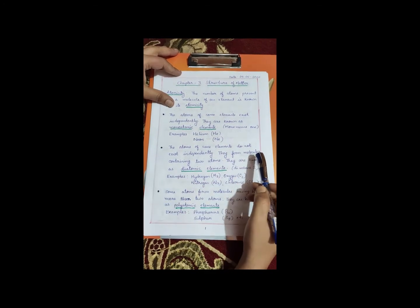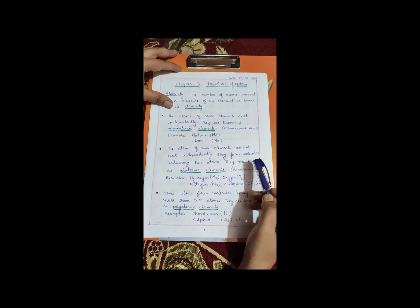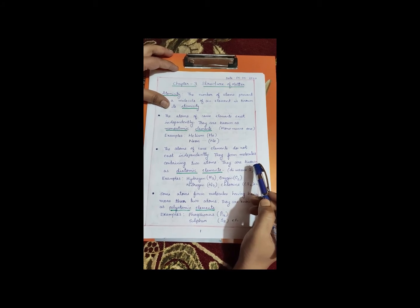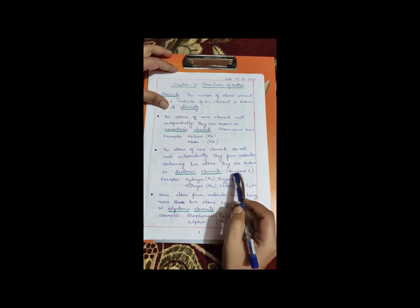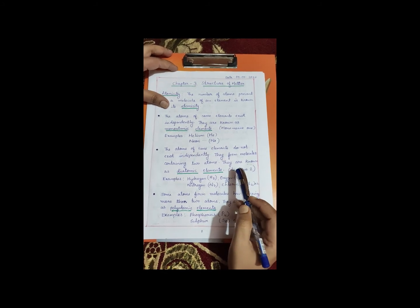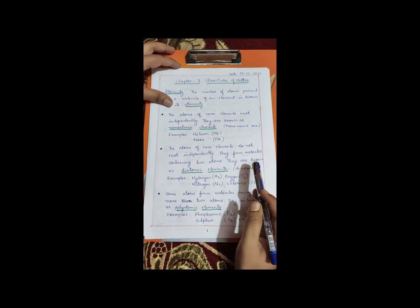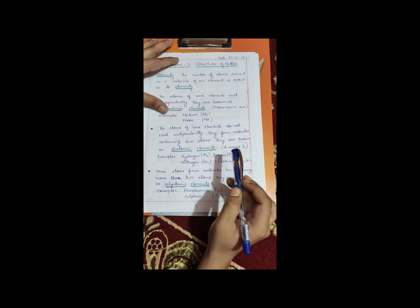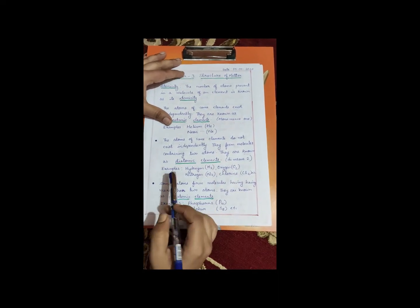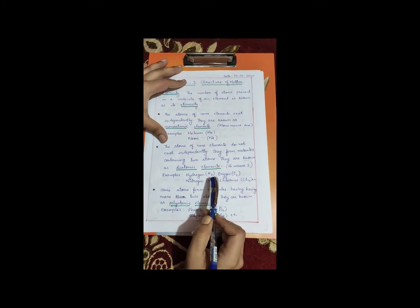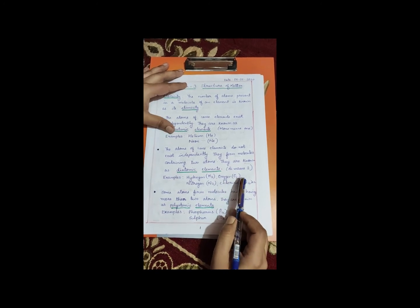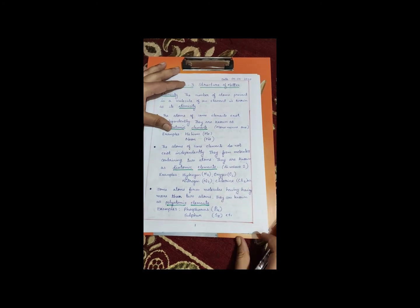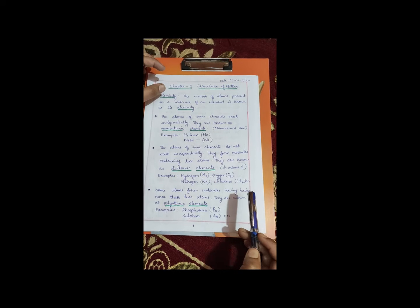The atoms of some elements do not exist independently — they form molecules containing two atoms. They are known as diatomic elements. Di means two. These elements combine and form molecules having two atoms. Examples are Hydrogen (H2), Oxygen (O2), Nitrogen (N2), and Chlorine (Cl2). All these are examples of diatomic elements and their atomicity is two.